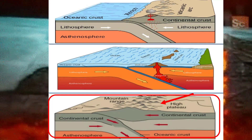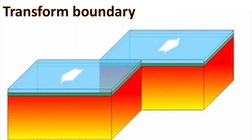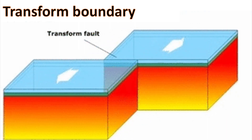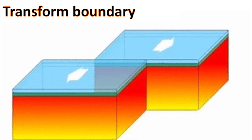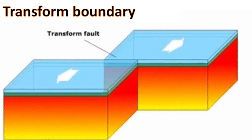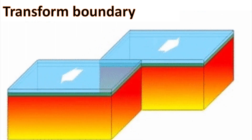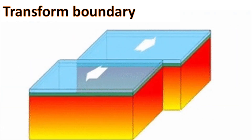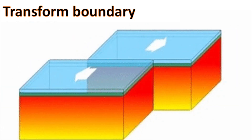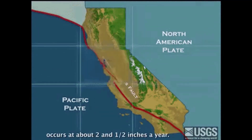Two plates sliding past each other form a transform plate boundary. Natural or human-made structures that cross a transform boundary are offset, split into pieces, and carried in opposite directions. Earthquakes are common along these faults. In contrast to convergent and divergent boundaries, crust is cracked and broken at transform margins but is not created or destroyed. California's San Andreas Fault is a transform boundary.